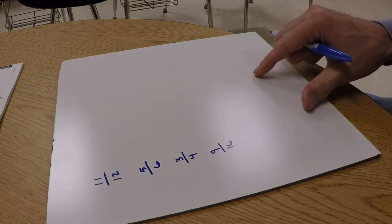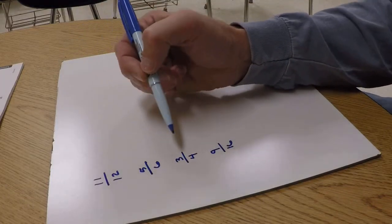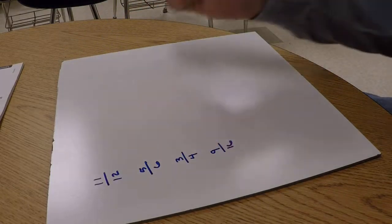So here's four fractions that we want to put in order from least to greatest: 11 over 12, 5 over 6, 3 over 4, and 9 over 16.